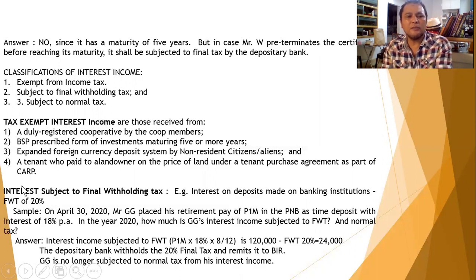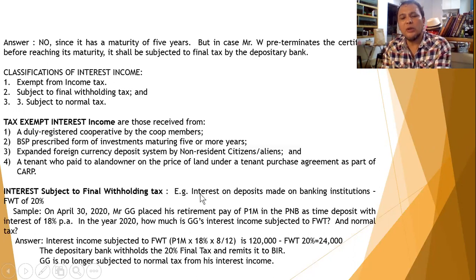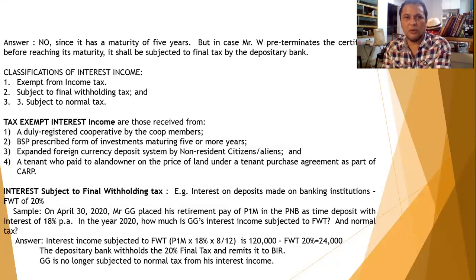The second classification of interest income covers those which are subject to final withholding tax. If interest income is subject to final withholding tax, the taxpayer need not declare it in the income tax return because the tax has already been paid with finality. Examples include interest on deposits made in banking institutions, where there is a final withholding tax of 20%. If you have a bank deposit and earn interest, the withholding tax is remitted by the depository bank to the BIR.